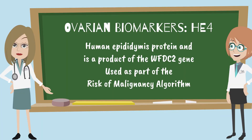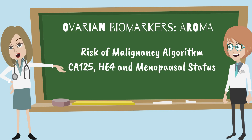HE4 is derived from human epididymis protein and is a product of the WFDC gene, which is overexpressed in patients with serous and endometrioid cancer. HE4 is useful for monitoring recurrent or progressive disease in epithelial ovarian cancer and can be used as part of the Risk of Malignancy Algorithm (ROMA). ROMA includes both CA-125 and HE4, and is useful for assessing a woman's risk when she has a mass and is undergoing surgery. Menopausal status is used to stratify patients into low and high risk groups.